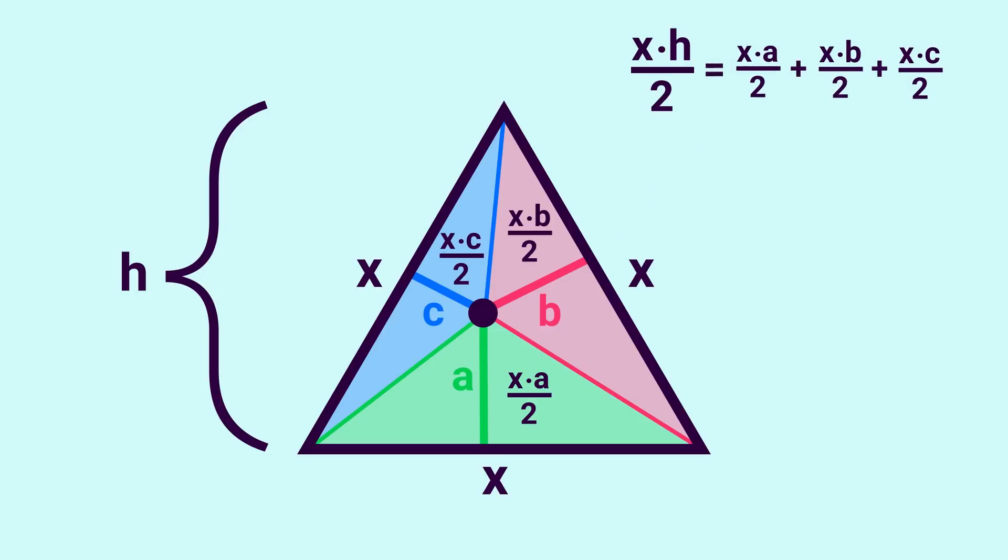And the sum of all of those equals the entire triangle. Canceling the 2's and the X's, we get that A plus B plus C equals H. This is known as Viviani's theorem, by the way.